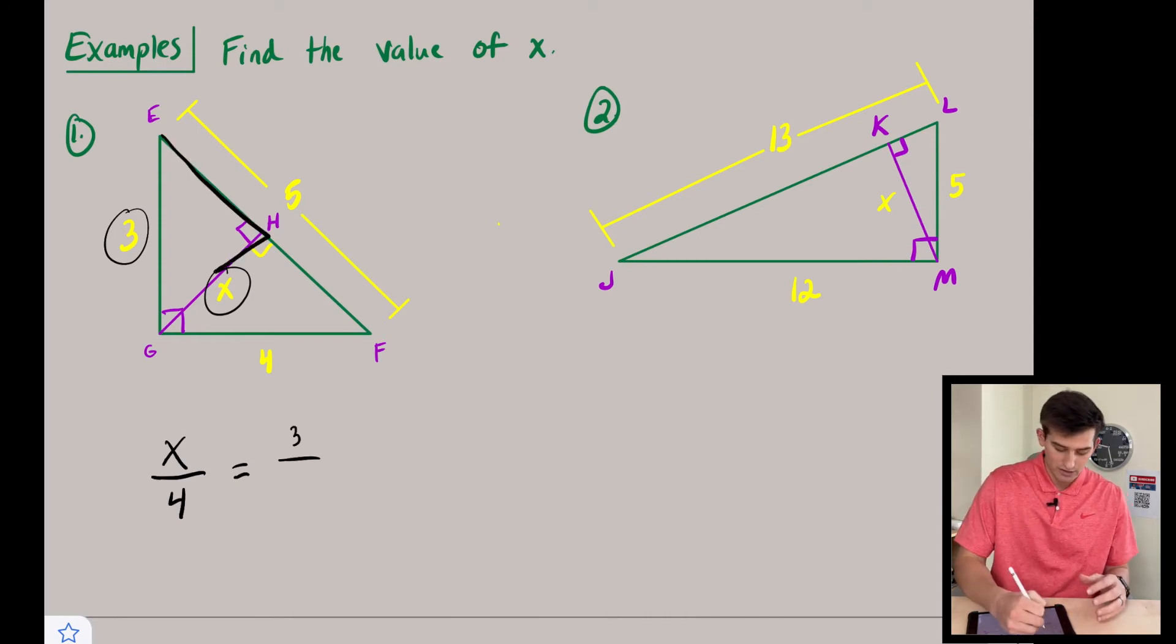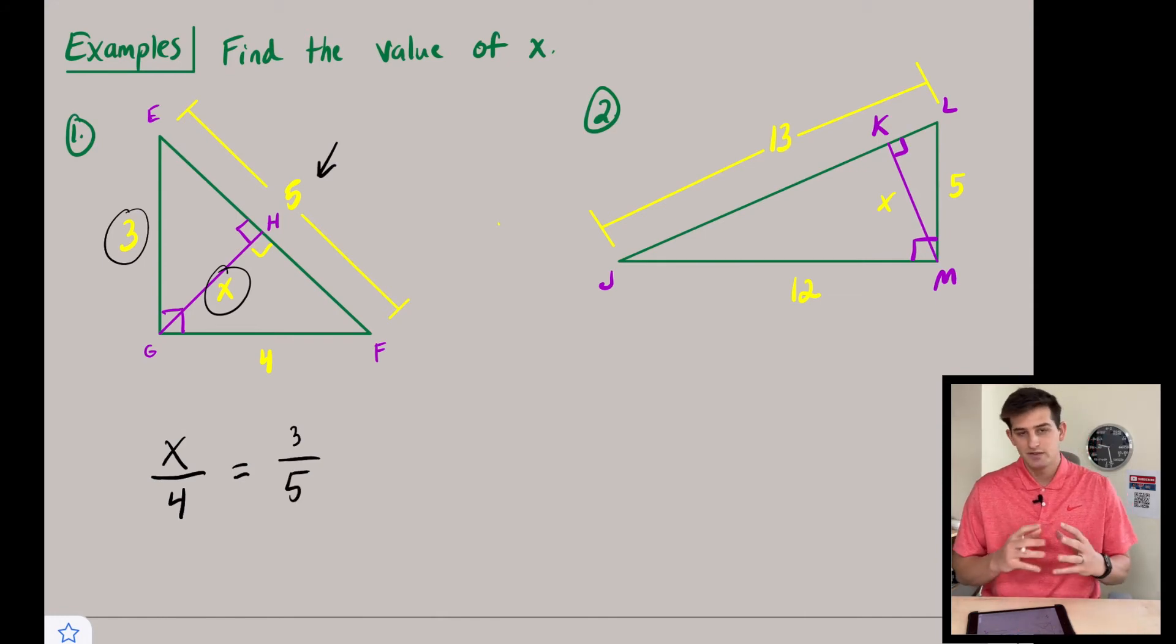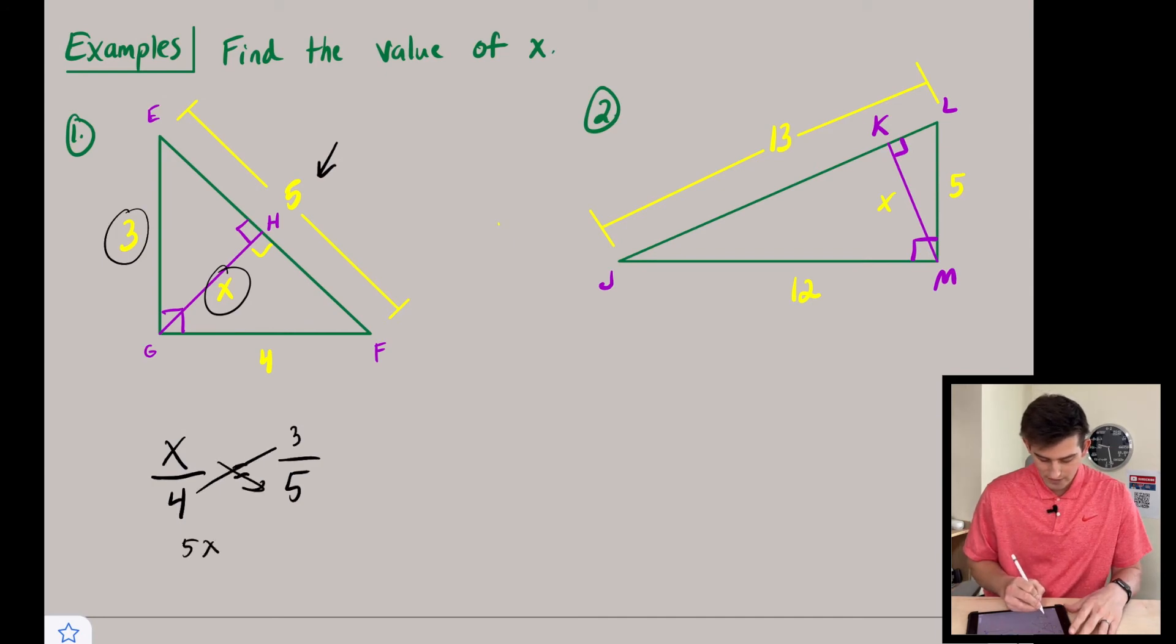Now, since I use the hypotenuse there, I'm going to use the hypotenuse from my larger triangle, which is five. And so now we've set up a proportion and we can just cross multiply and figure out our answer. So we cross multiply and we get five x equals three times four, which is 12.